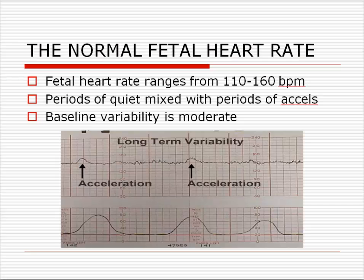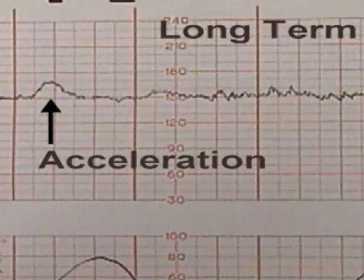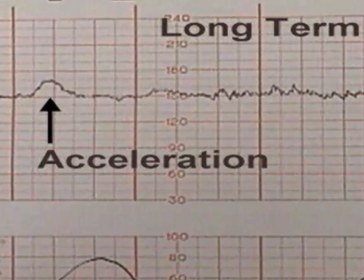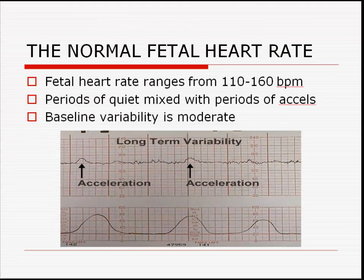The normal fetal heart rate ranges from 110 to 160 beats per minute. If you look at the fetal strip closely, there are numbers present vertically that indicate what the fetal heart rate is. The normal fetal heart rate also shows moderate variability with occasional accelerations and small or absent decelerations. Notice the large contractions present.